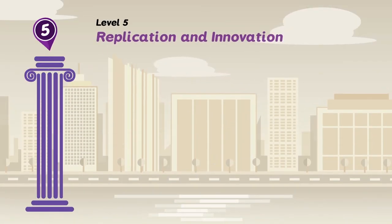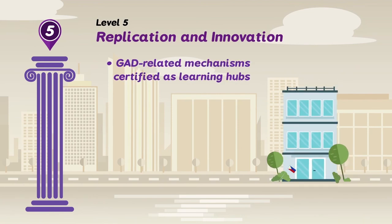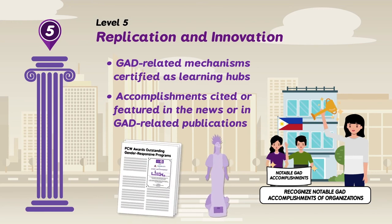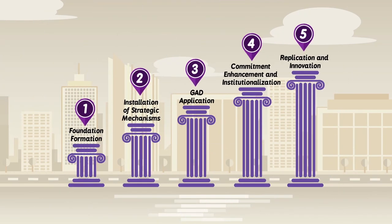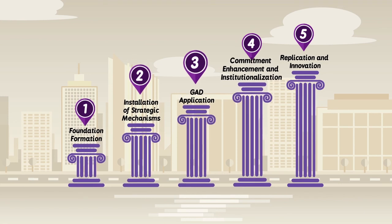Level 5: Replication and Innovation. The Enhanced GMEF included this level to recognize notable GAD accomplishments of organizations. This level indicates that GAD has been fully mainstreamed into the mandate of the organization and is being recognized and replicated by others as a standard in gender mainstreaming. The Enhanced GMEF expanded the descriptor matrix by providing a visual progression of gender mainstreaming efforts from Level 1 to Level 5.